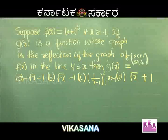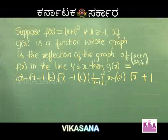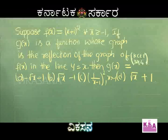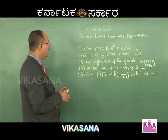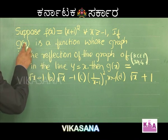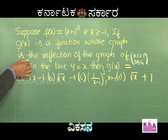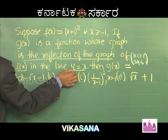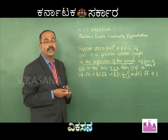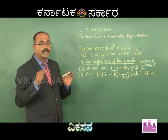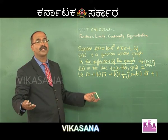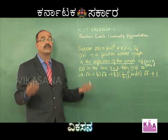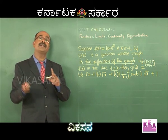Next problem: Suppose f(x) = (x+1)² for all x ≥ -1. If g(x) is a function whose graph is the reflection of f(x) over the line y = x, then g(x) = ? The key phrase is 'reflection over y = x,' which describes finding the inverse function. Just as sin x and sin⁻¹x are reflections of each other over y = x.